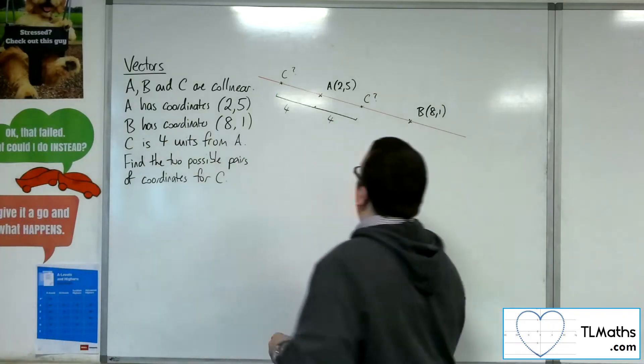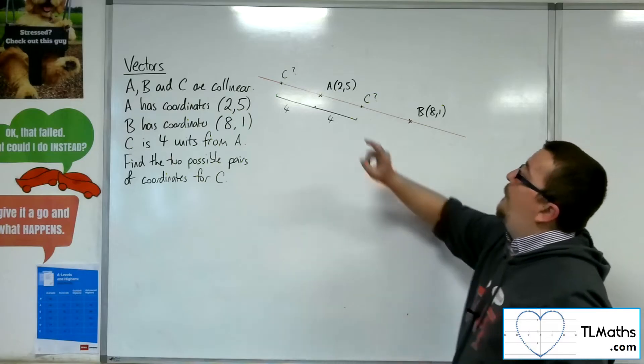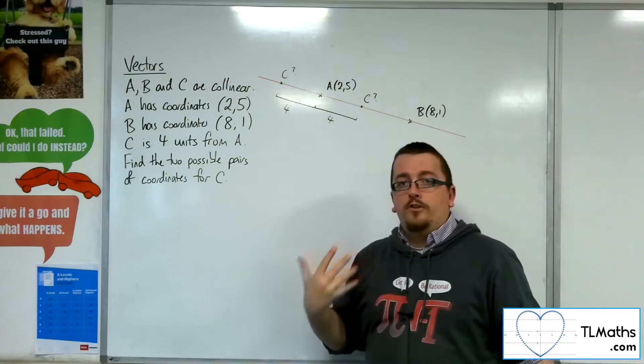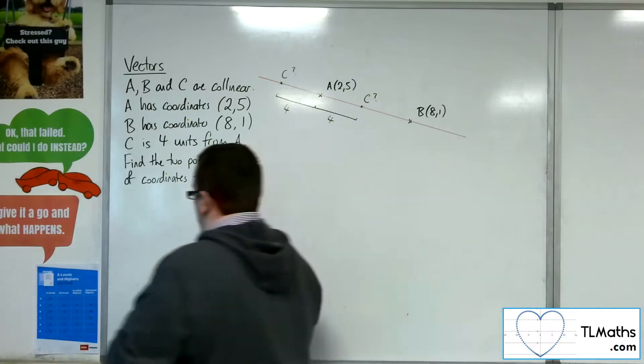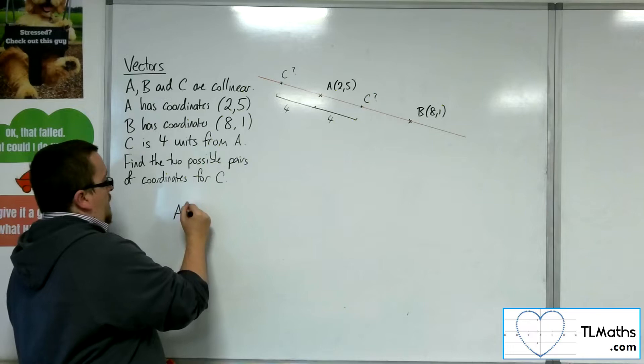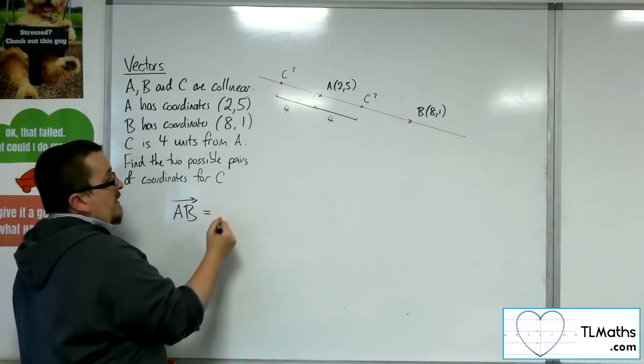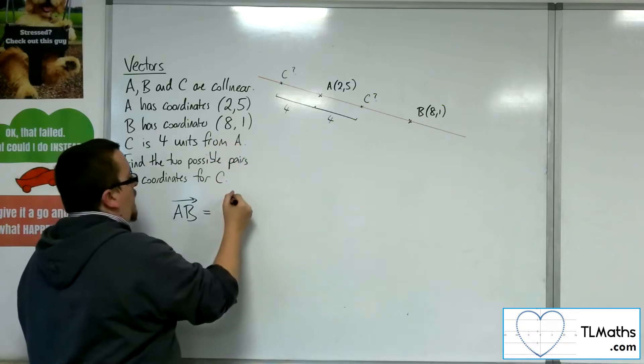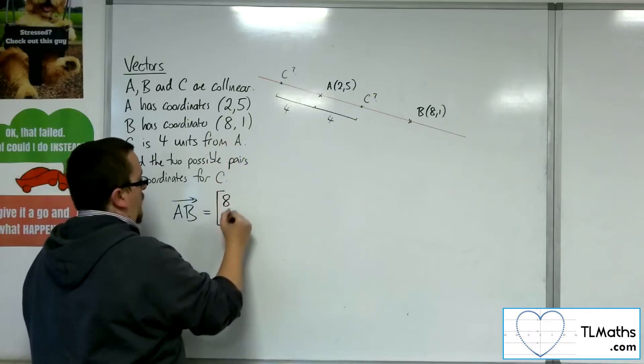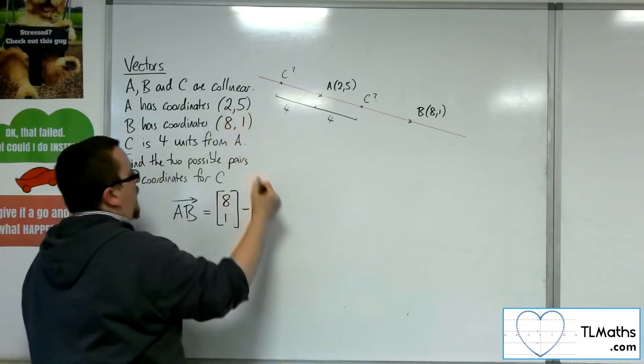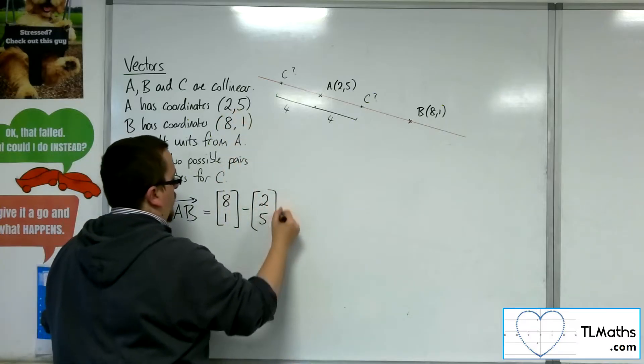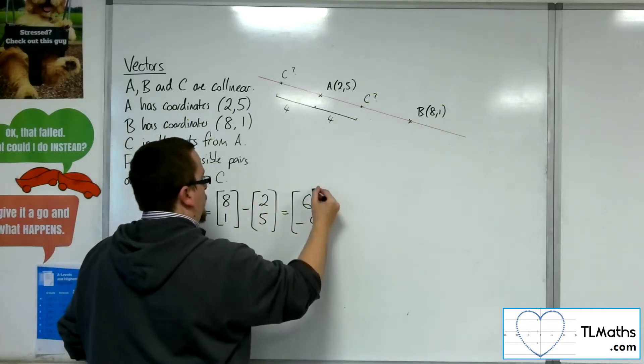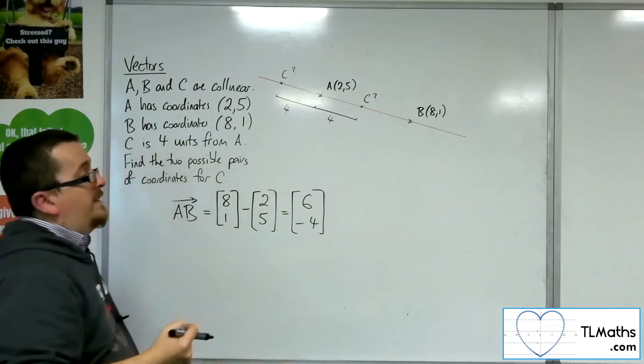So how am I going to go about this? Well, it makes sense to find the vector A to B, because at least then I know the direction of the line. So A, B, that vector is OB minus OA. So that is 8, 1, take away 2, 5. So we're going to have 6, minus 4. So that is the vector A to B.